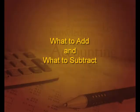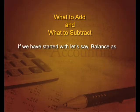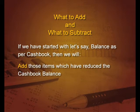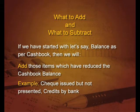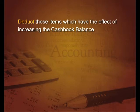All these things have to be added or subtracted. The most important question is: what to add and what to subtract? If we have started with balance as per cash book, then we will add all those items which have reduced the cash book balance, because whatever has reduced will be added back. Similarly, we will deduct all those items which have the effect of increasing the cash book balance.